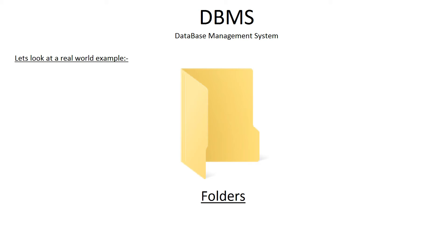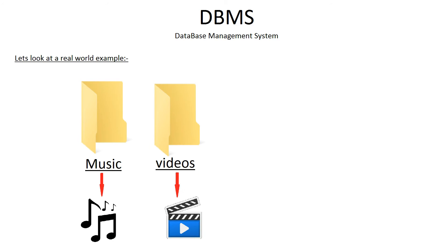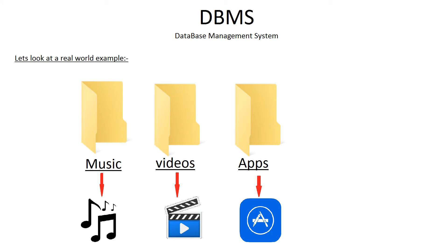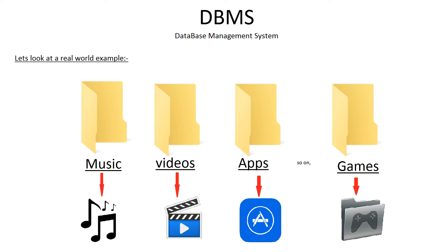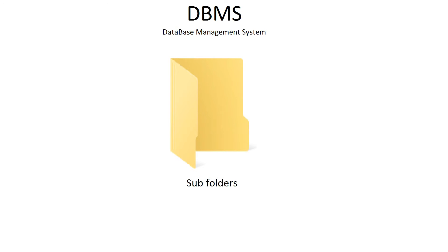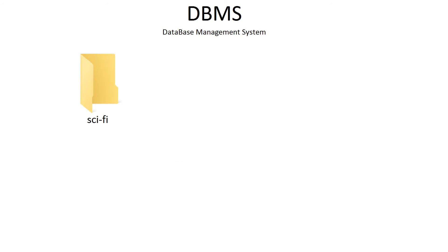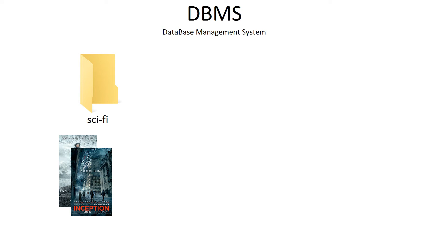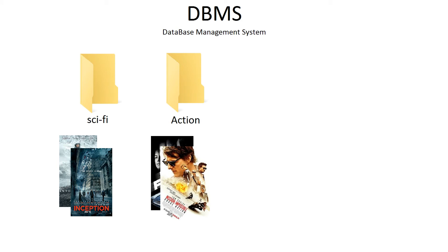For example, audio in a music folder, movies in a videos folder, applications in a separate application folder, and so on. Now let's go one step further. If you have many movies, then you might have subfolders inside the movie folder, and in those subfolders you would have categorized those movies. For example, in a sci-fi folder there will be movies like Interstellar, Inception etc. In an action folder, movies like Fast and Furious, Mission Impossible etc. Folders like comedy, romance, adventure, and so on.